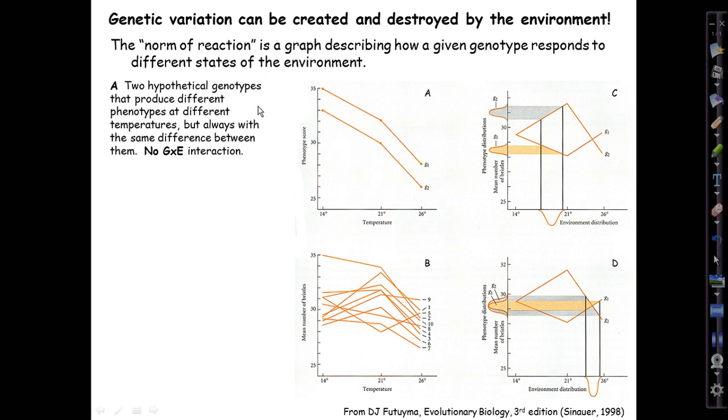Panel A shows two hypothetical genotypes which are modeled on real data in panel B from this Drosophila bristle number experiment. Two genotypes that produce different phenotypes at different temperatures. Here we have an actual environmental variable, temperature, to which bristle number is known to respond. It's the temperature of the incubator where you grow the larval Drosophila. So genotypes called G1 and G2.